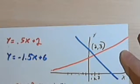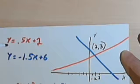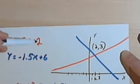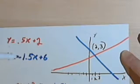Let's say we're given this situation. We've got two equations: y equals 0.5x plus 2, and y equals negative 1.5x plus 6. And we're told to solve this as a system of equations.